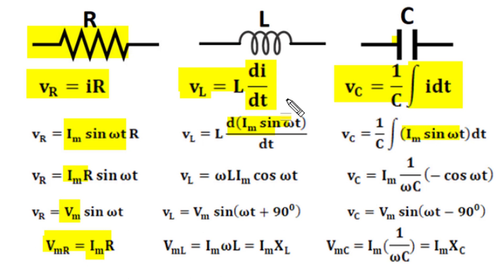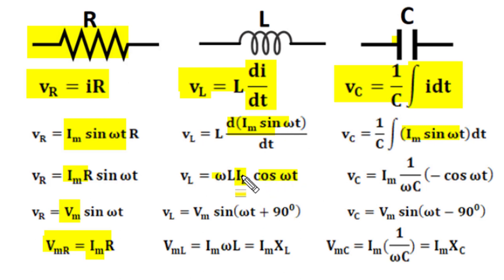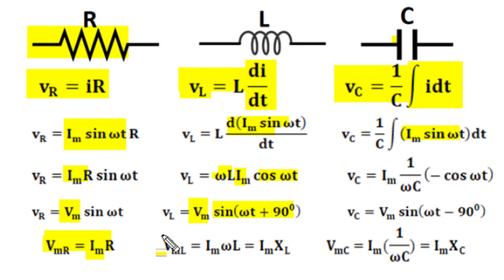In an inductor, when I_m sin(ωt) is differentiated, I_m being constant comes out and differentiation of sin(ωt) becomes ω cos(ωt). The product of I_m with ωL becomes the amplitude of voltage, and we can write cos(ωt) as sin(ωt + 90°). So the peak magnitude of voltage across the inductor is peak current multiplied by ωL.